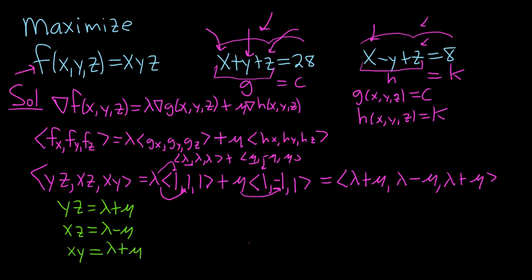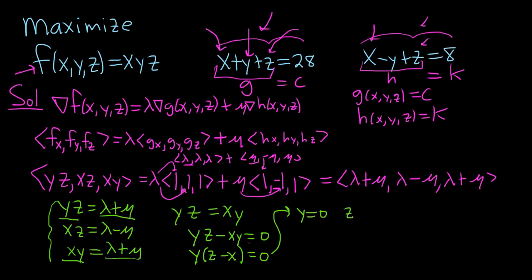So what do we do next? There's infinitely many ways to proceed. I am thinking that we can notice that yz is equal to lambda plus mu, and xy is equal to lambda plus mu. So we have that yz is equal to xy. If we subtract xy from both sides, we get yz minus xy equals 0. We can factor out y. So we get y times parentheses z minus x equals 0. Whenever you have a product equal to 0, you can set each factor equal to 0. So we get y equals 0, z minus x equals 0. So here we get z equals x.